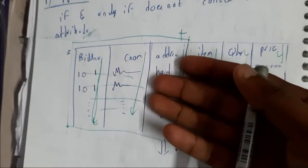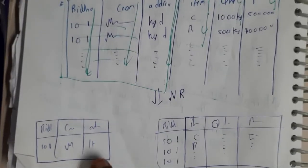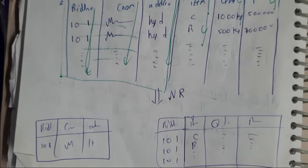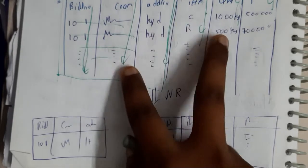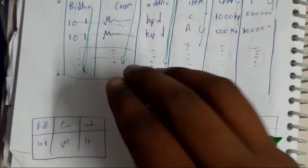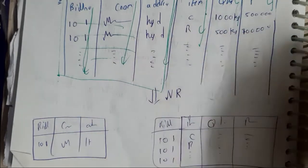This identification is nothing but normalization and reducing is normalization. Sorry, identifying is normal form and reduction is normalization. So if you ask me how can we rectify this, we can rectify this by dividing the bill number in both tables. We will still have redundancy but when we compare with the previous it is a bit less.